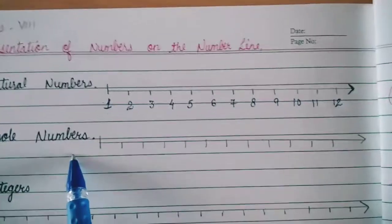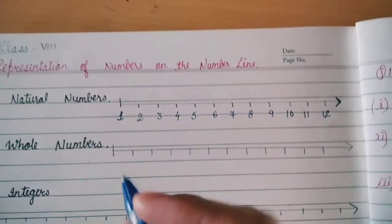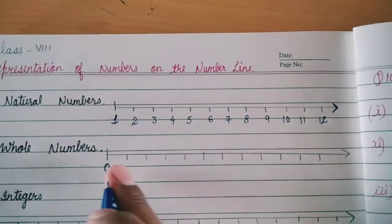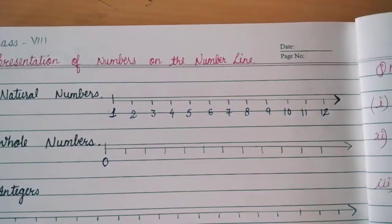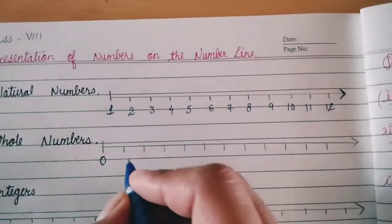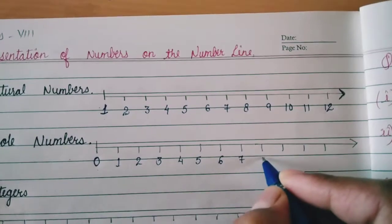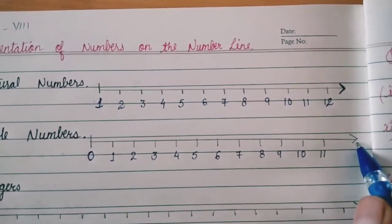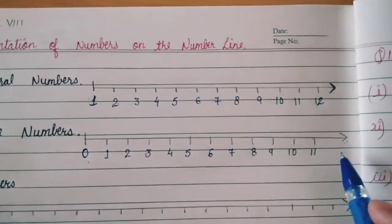Then whole numbers. Whole numbers is the set of zero and natural numbers, which means our whole number line will begin with zero. Same as natural numbers, we will draw the line, part each gap with equal distance, and it will begin with zero, then 1, 2, 3, 4, 5, 6, 7, 8, 9, 10, 11. And once again here we have an arrow, meaning the number line is not stopped here — it began with zero and will go continuously.